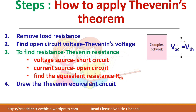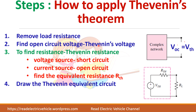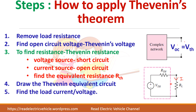Now you can draw the equivalent circuit by connecting the voltage source in series with the resistance. This is the Thevenin equivalent circuit. If you know the value of RL, you can find what is the current through the load. So this complex network gets simplified.